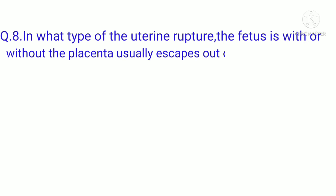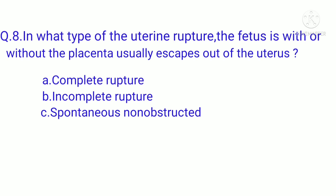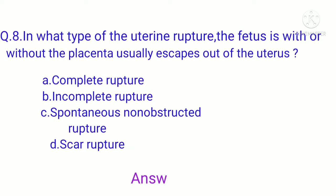Question 8: In what type of uterine rupture does the fetus, with or without the placenta, usually escape out of the uterus? Option A: complete rupture, Option B: incomplete rupture, Option C: spontaneous non-obstructive rupture, Option D: scar rupture. The correct option is A, complete rupture.